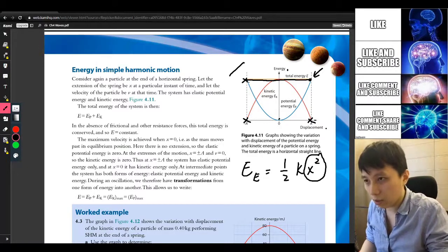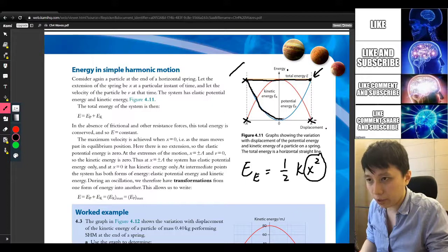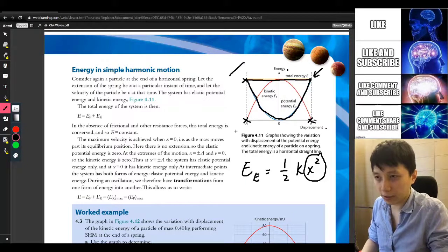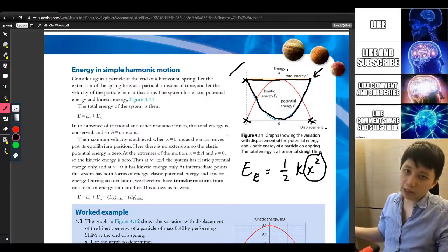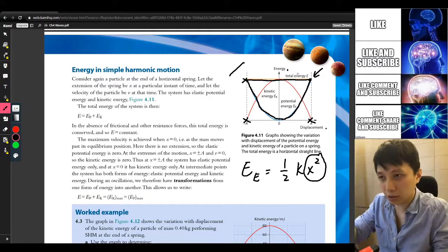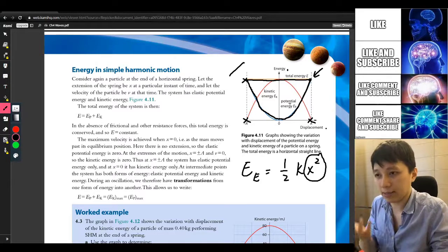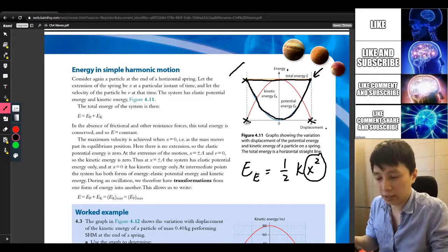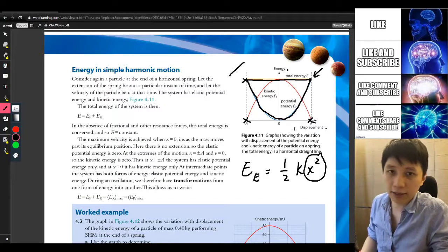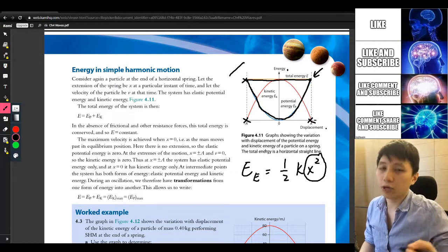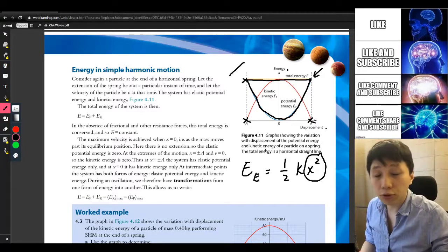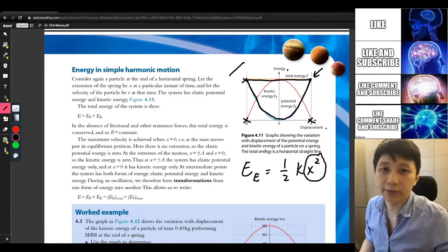And so once you get the blue curve, the potential energy of elastic potential energy, then what you have to do is just, the simple way is to do the minus using the total minus the elastic potential, then you can obtain the red line for representing the kinetic energy. So this is how you can obtain the graph for a horizontal simple harmonic motion of a spring mass system.